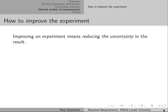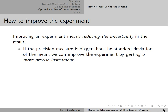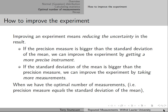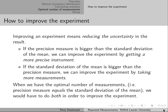Improving an experiment means reducing the uncertainty in the result. If the precision measure is bigger than the standard deviation of the mean, we can improve the experiment by getting a more precise instrument. If the standard deviation of the mean is bigger than the precision measure, we can improve by taking more measurements. When we have the optimal number of measurements, those two are equal, which means we would have to do both — get a more precise instrument and take more measurements — in order to improve.